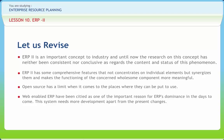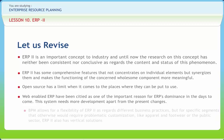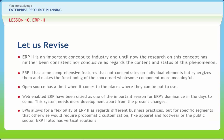ERP is the central component in the ERP-2 conceptual framework. The traditional ERP modules like Financials, Sales and Distribution, Logistics, Manufacturing, and Human Resources are still the backbone of ERP, along with additional modules like Quality Management, Project Management, or Maintenance. BPM allows for flexibility of ERP-2 as regards different business practices, and for specific segments requiring problematic customization — like apparel and footwear or the public sector — ERP-2 also has vertical solutions.